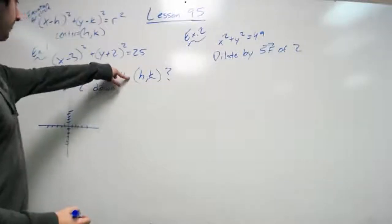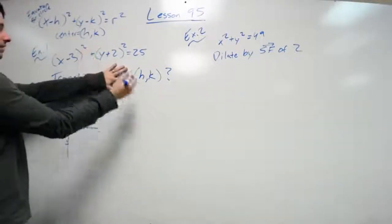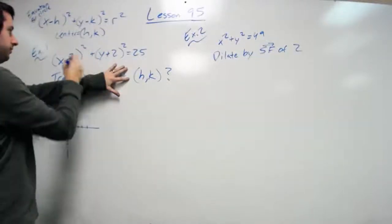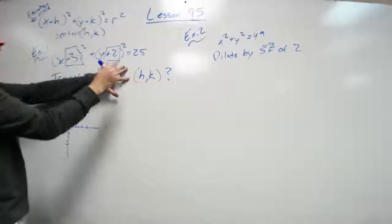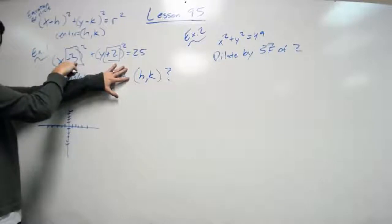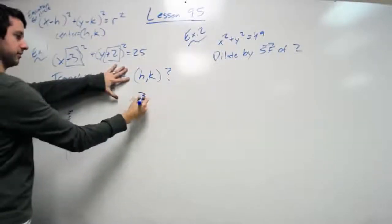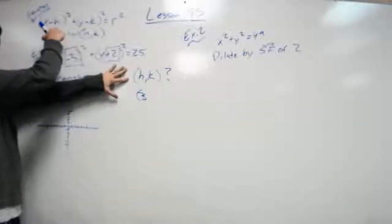Well, my center is going to be, now notice they give negative three and positive two. So let's break these down, negative three and positive two. Notice in the formula, it's x minus h squared. So if I have a negative three here, that means my h is a positive three, because if I was to plug in that three to the formula, that would make it negative.